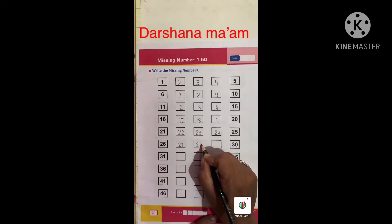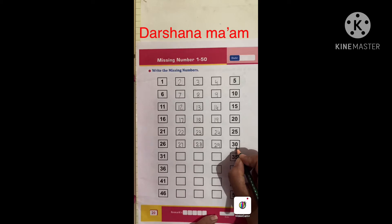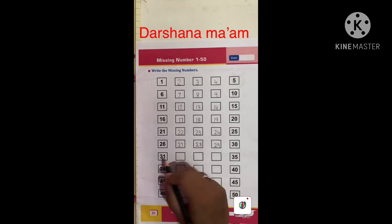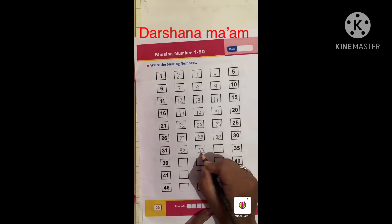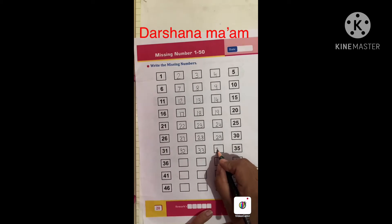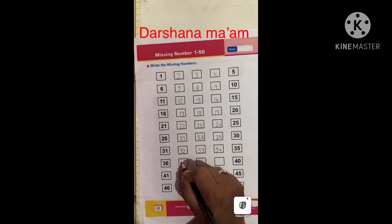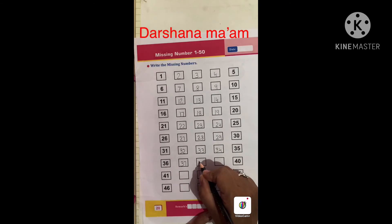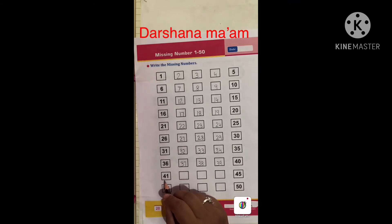Twenty-eight, twenty-nine, thirty, thirty-one. Thirty-one, thirty-two, thirty-three, thirty-four, thirty-five, thirty-six, thirty-seven, thirty-eight, thirty-nine, forty, forty, forty-one.